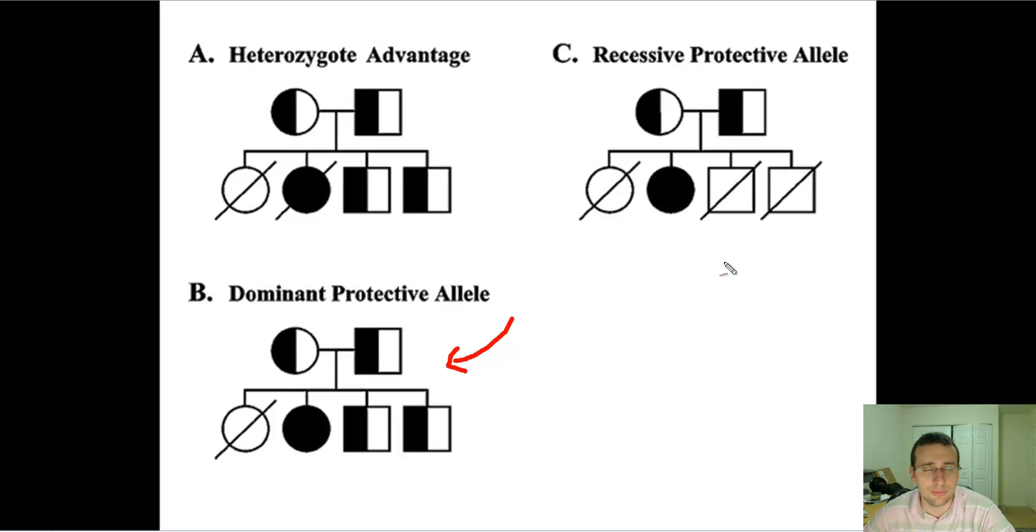Then you also have these situations with the heterozygotic advantage. That's when being the hybrid is what gives you the advantage. In this case, the dominant or the recessive will both be selected against. Then you get what's called balanced polymorphism, where the entire population is going to be heterozygous and the alleles will be fixed in a 50-50 ratio between the two of them.